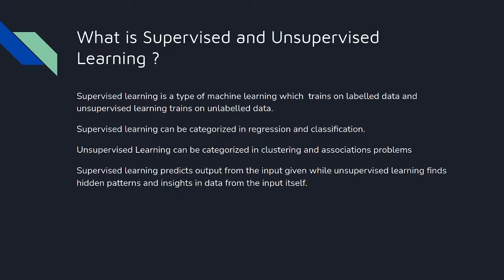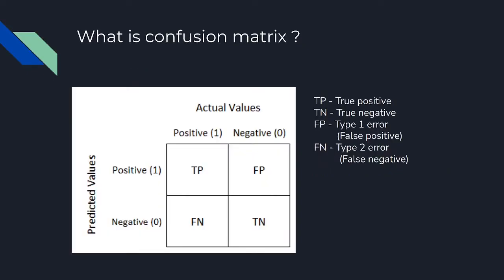First question: what is supervised and unsupervised learning? Supervised learning is a type of machine learning which trains on labeled data, and unsupervised learning trains on unlabeled data. Supervised learning can be categorized into regression and classification; unsupervised learning can be categorized into clustering and association problems. Supervised learning predicts output from the input, while unsupervised learning finds hidden patterns and insights in data.